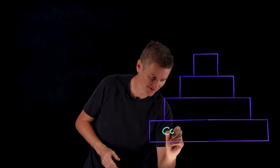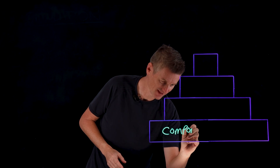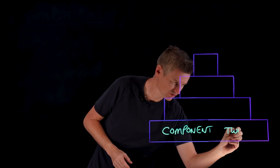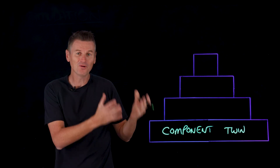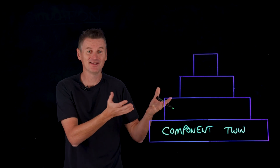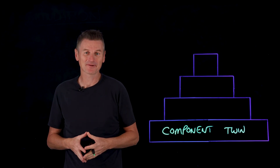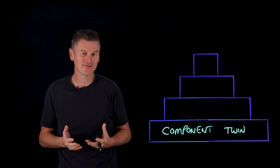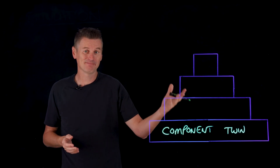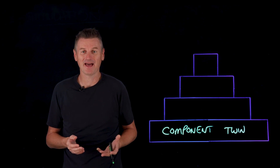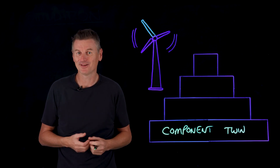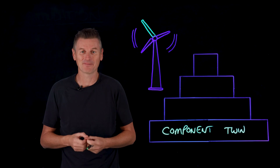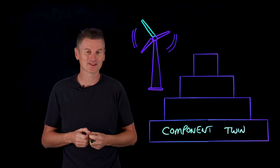There are several types of digital twin, depending upon what you want to model. The first is a component twin. Component twins are the basic unit of a digital twin — they represent individual components or parts of a system, capturing their specific behavior and performance. A component twin could model the behavior of a single blade on a wind turbine, tracking its stress levels, vibration patterns, and wear over time.